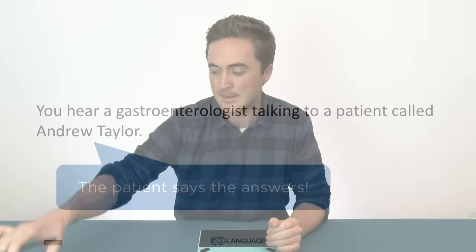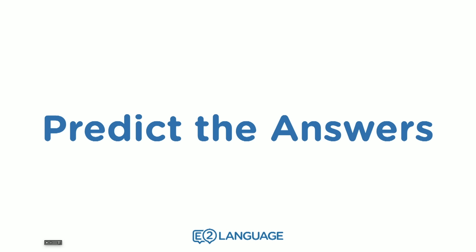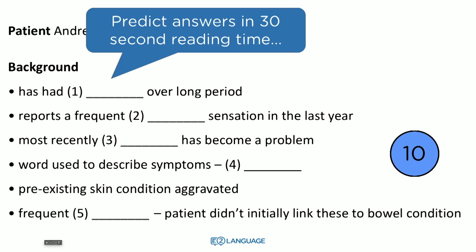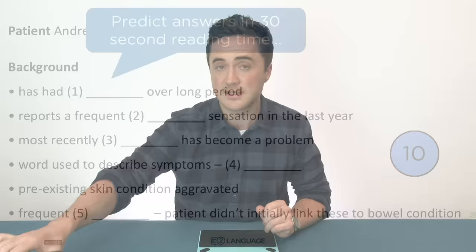The second thing I want to talk about is how you can — I wouldn't say predict the answers, but you can anticipate what the answers might be, and this is extremely helpful. What happens is you get 30 seconds reading time. The audio will say 'you will hear a gastroenterologist talking to a man named Andrew Taylor.' You now have 30 seconds to look at the listening paper. What you can do in those 30 seconds is anticipate what type of word will fit each gap.